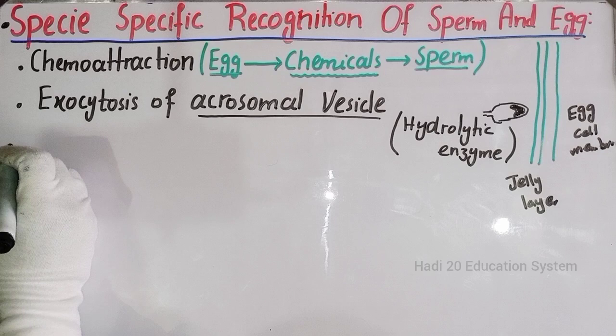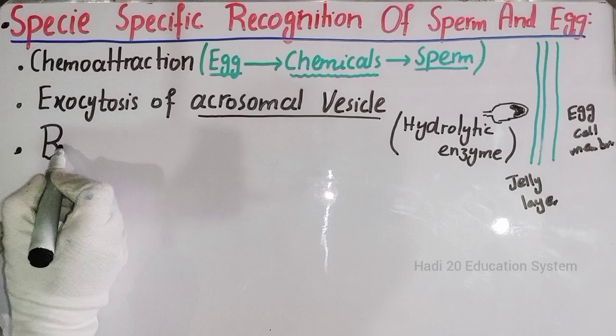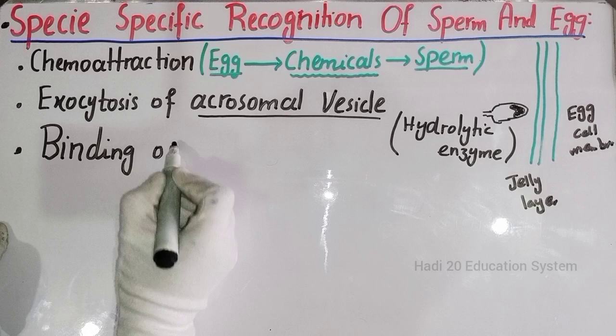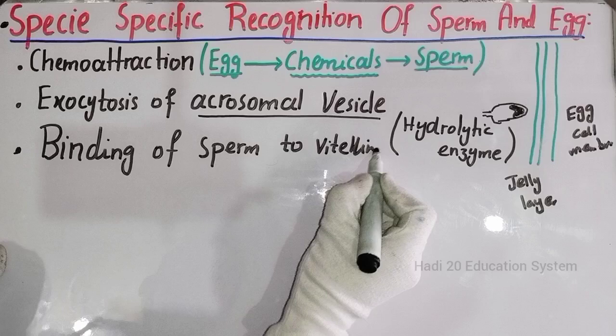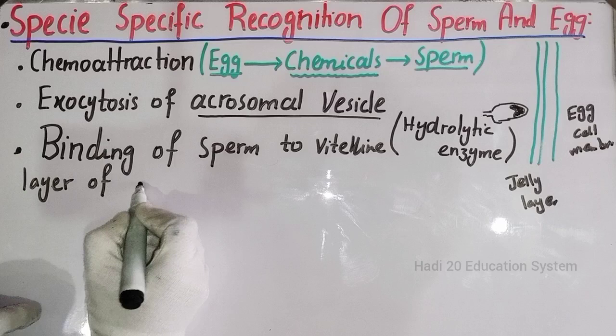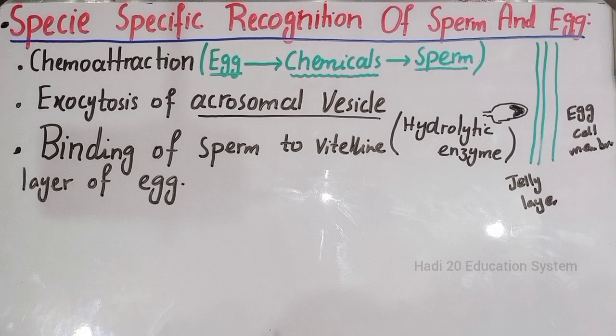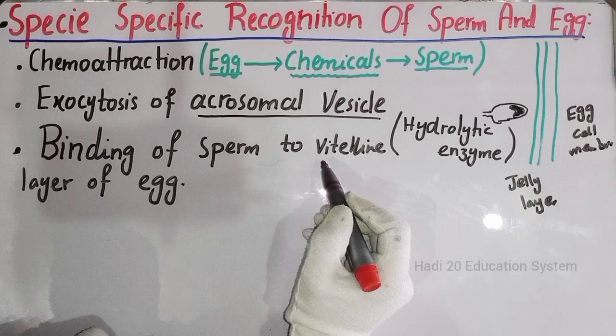The third step is the binding of sperm to the vitelline layer. The sperm combines and binds to the vitelline layer of the egg. In this third step, the sperm cell will bind to the egg cell, and the vitelline layer will be recognized.